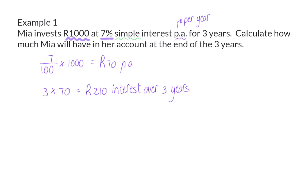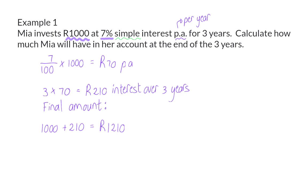The question here is how much money will Mia have in this account? Remember that she started off with 1000 Rand in that account, and then she earned 210 Rand interest, which means the total amount in this account is 1210 Rand.